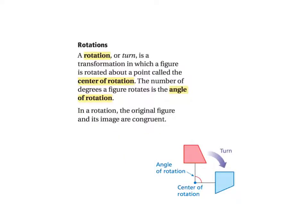Let's write down some definitions before we move on. A rotation, or a turn, is a transformation in which a figure is rotated about a point, called the center of rotation. The number of degrees a figure rotates is the angle of rotation.